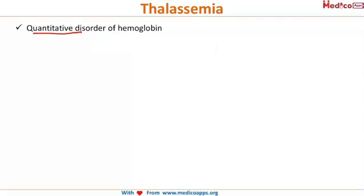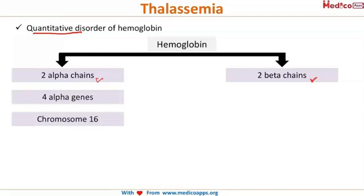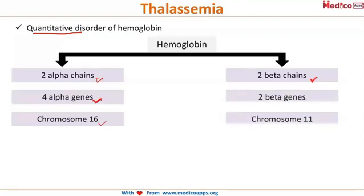The hemoglobin consists of 2 alpha chains and 2 beta chains. For the formation of the 2 alpha chains, 4 alpha genes are required and they are present on chromosome number 16. For the formation of the 2 beta chains, 2 beta genes are required and they are present on chromosome number 11.